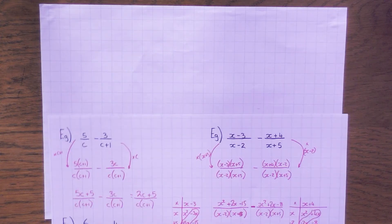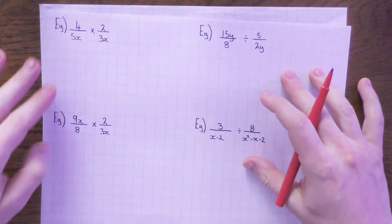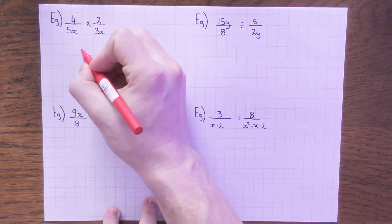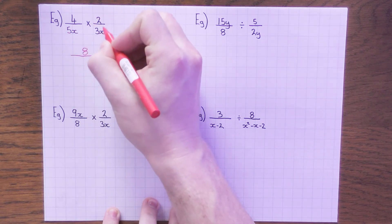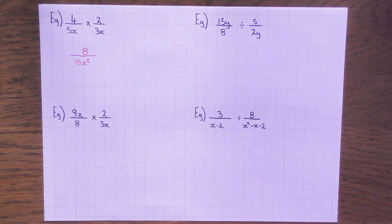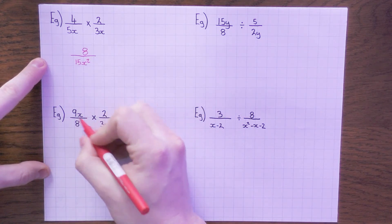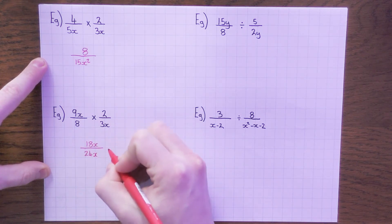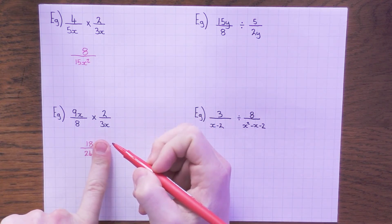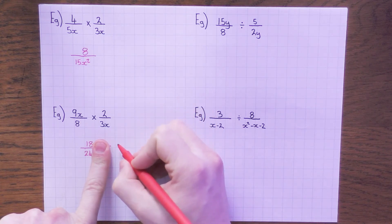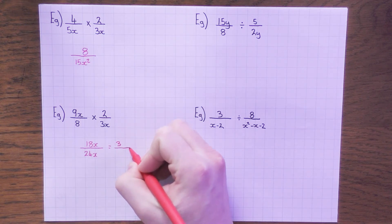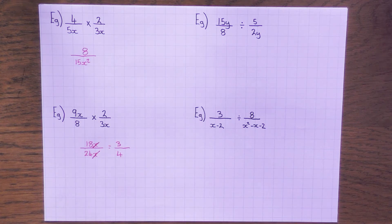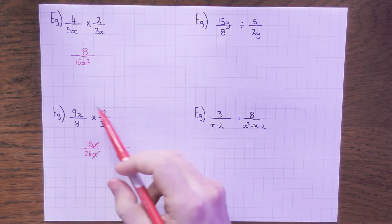Let's go on to what happens when we multiply or divide variables — that's much easier. When we're multiplying fractions, we just times the top and times the bottom. So: 4 times 2 is 8, and 5x times 3x is 15x². Same with this one: 9x times 2 is 18x, and 8 times 3x is 24x. We can simplify — 6 goes into both 18 and 24, so 18 ÷ 6 = 3 and 24 ÷ 6 = 4. And we've got x on top and bottom so they cancel out, leaving just ¾.